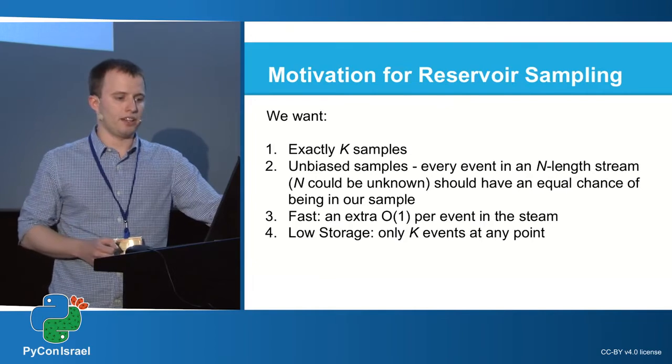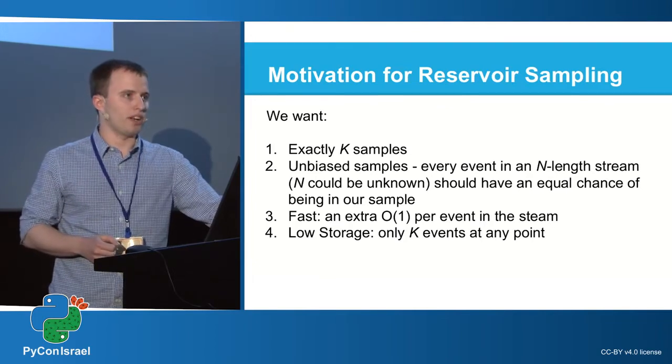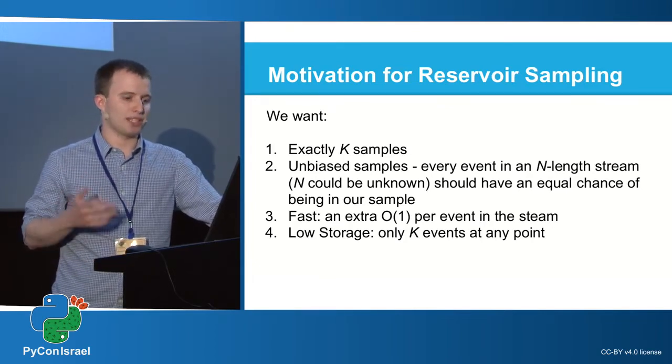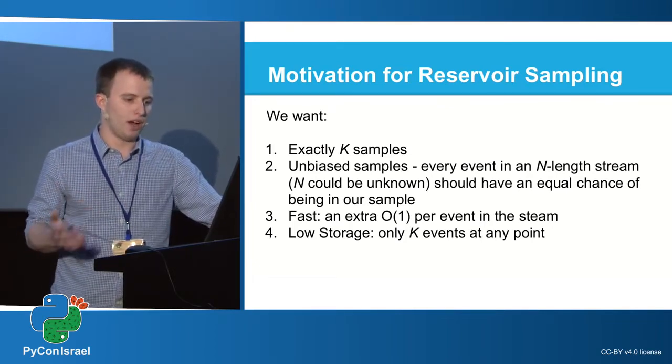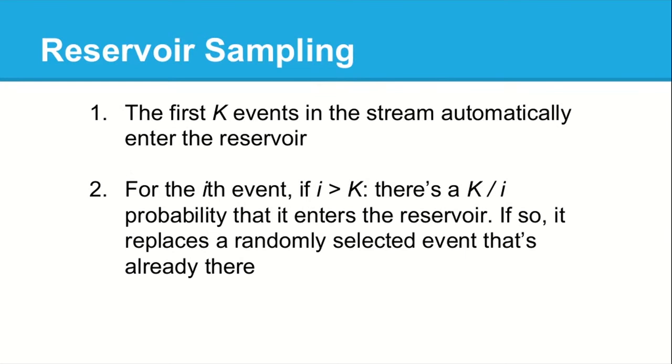It's fast, and because we only want a thousand events, at any point in time it's only storing up to a thousand events. Real simple, two steps: the first k events in the stream are just automatically added, and then for the thousand-and-one-th event in the stream, there's a one-in-a-thousand-and-one chance of it entering the reservoir, and so on.